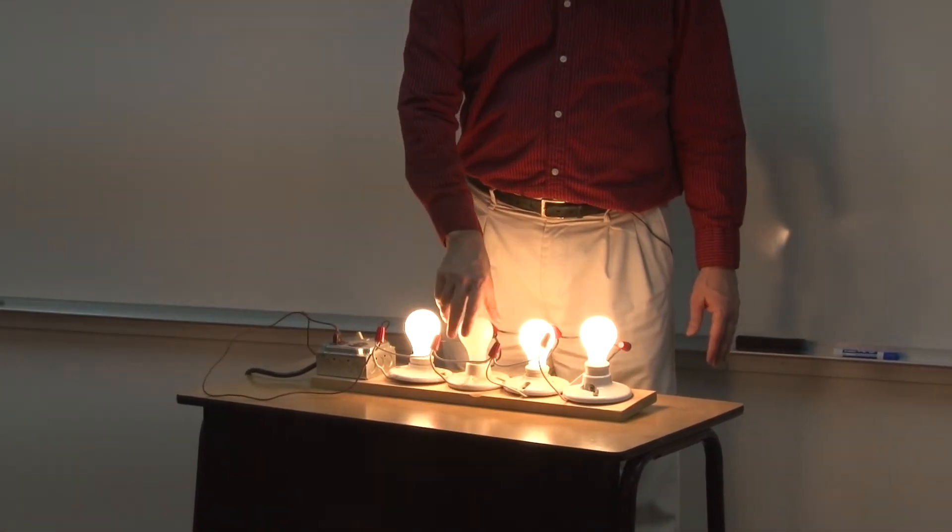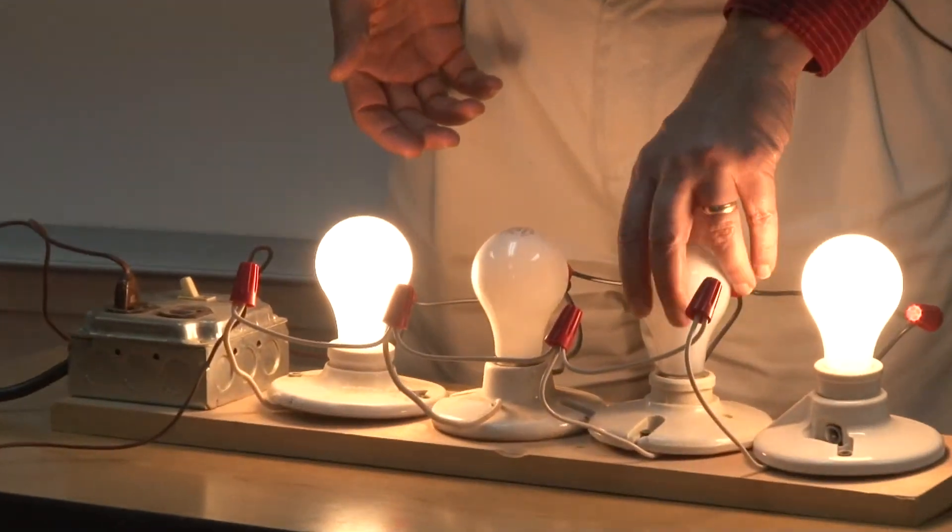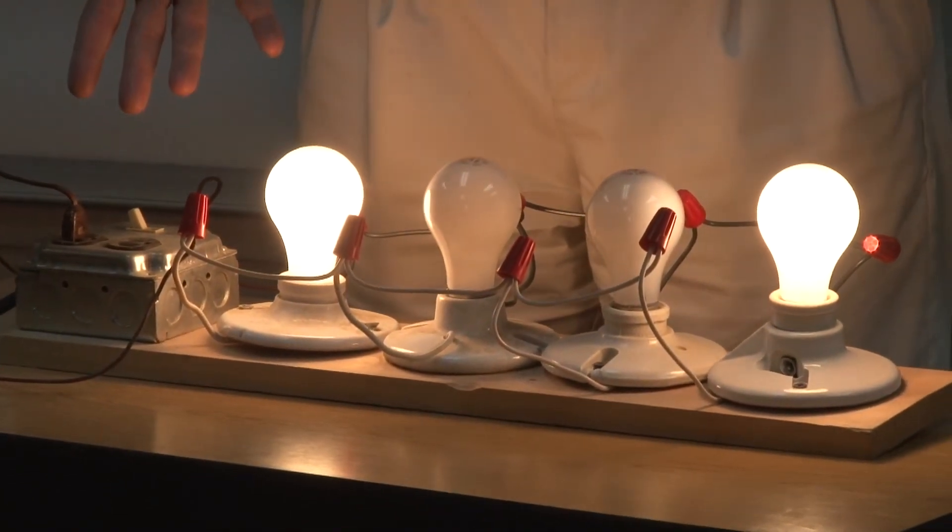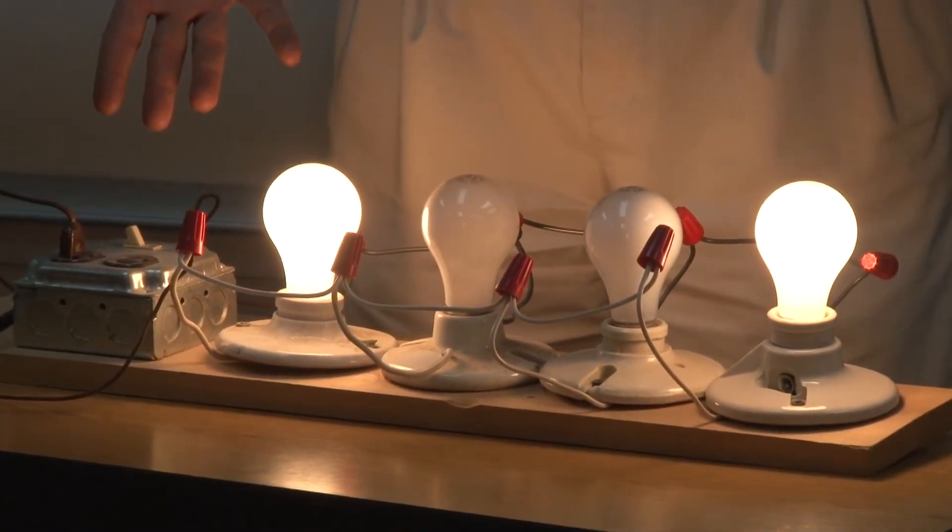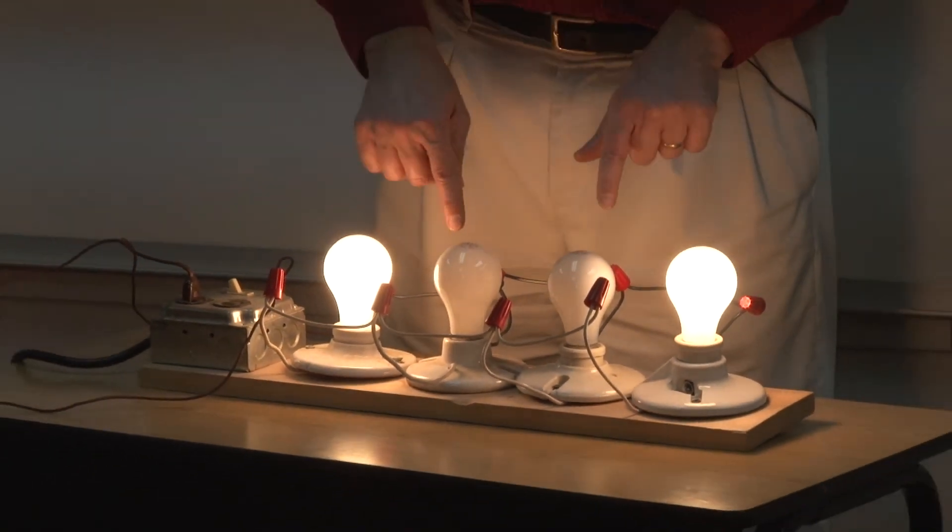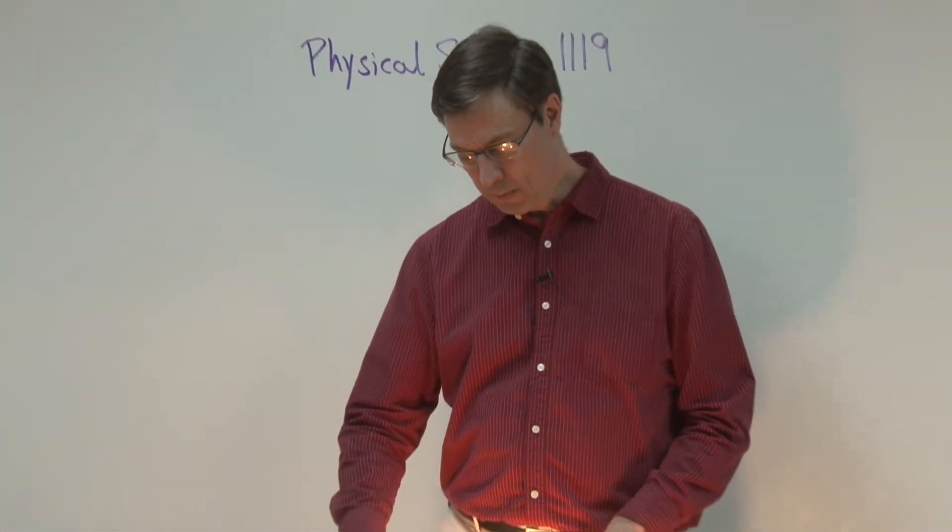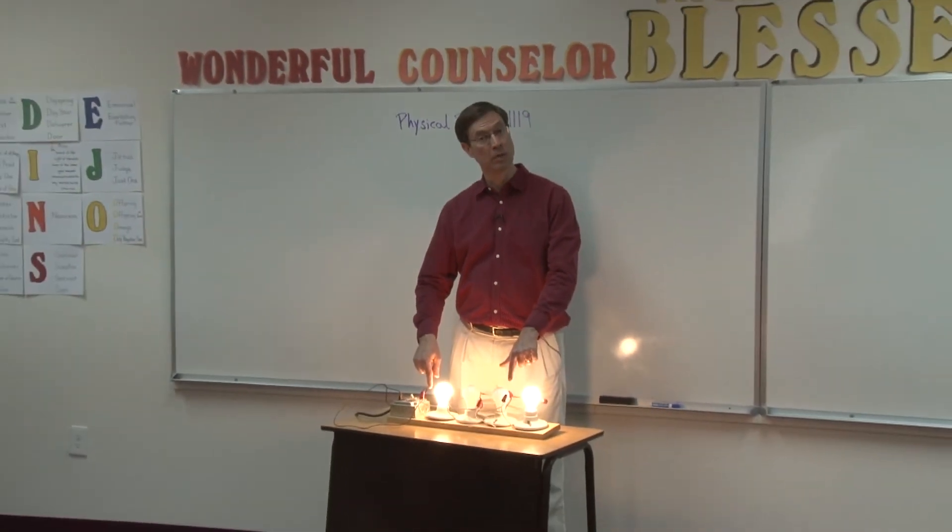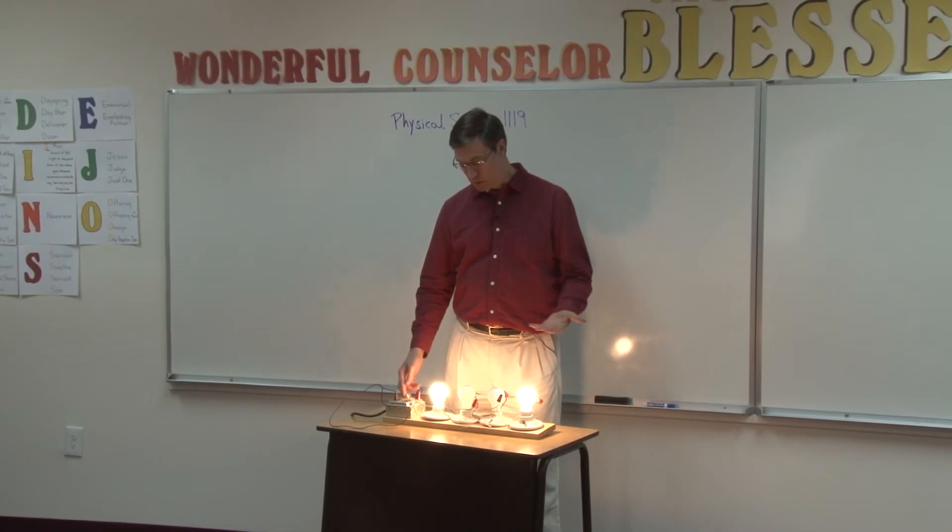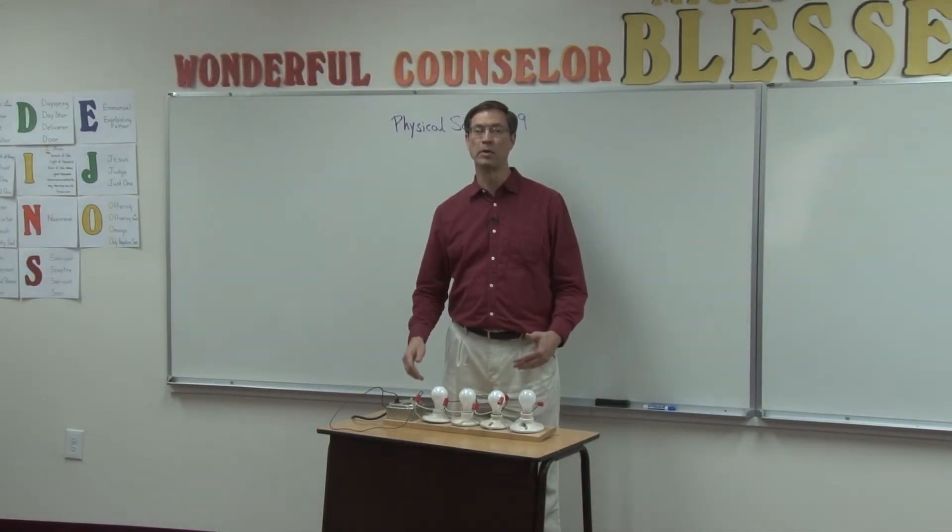I'm going to unscrew this one before it gets too hot. Notice, unscrew one, unscrew two, and they're all still lit up. So again, this is because it's wired in parallel, even though the electrons can't go through these two circuits, they are able to pass through the other two circuits, and the power is still on. All right, so now I'm going to illustrate what it looks like when they're wired in series.